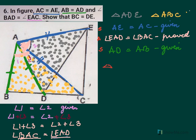So we have triangle ADE congruent to triangle ABC by SAS test, which means now, BC, which is here, BC must be equal to DE. So DE equal to BC by CPCT, corresponding parts of congruent triangle.